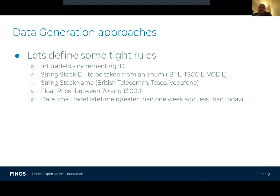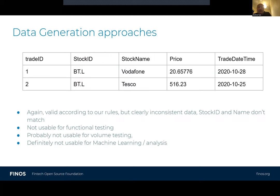If we try to tighten up some of these rules, we can generate more realistic data. We give each field types plus rules: the stock ID and stock name should come from enumerations, the price should float between two boundaries, and the trade date should be greater than one week ago but less than today. The data looks much better, but still has challenges — the stock ID and stock name don't match, and the price still has multiple significant figures after the decimal point. Even with simple rules, we've gotten much closer, but it's probably not usable for functional testing yet, and definitely not for machine learning analysis.